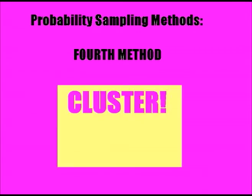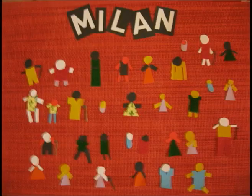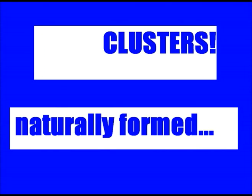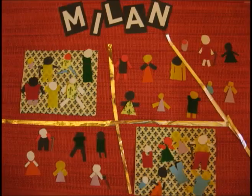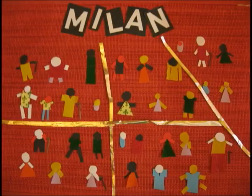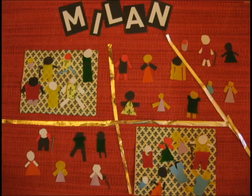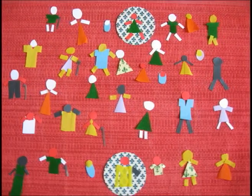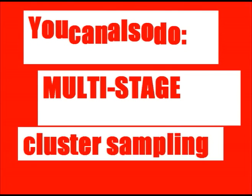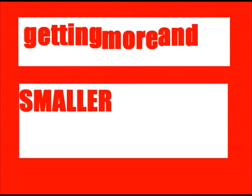Cluster! Divide your population into heterogeneous groups — clusters — naturally formed, like by quarter, zone, or attended school. Randomly select a predefined number of clusters, then pick all or some elements from them to form your sample. You can also do multi-stage sampling, getting more and smaller clusters.